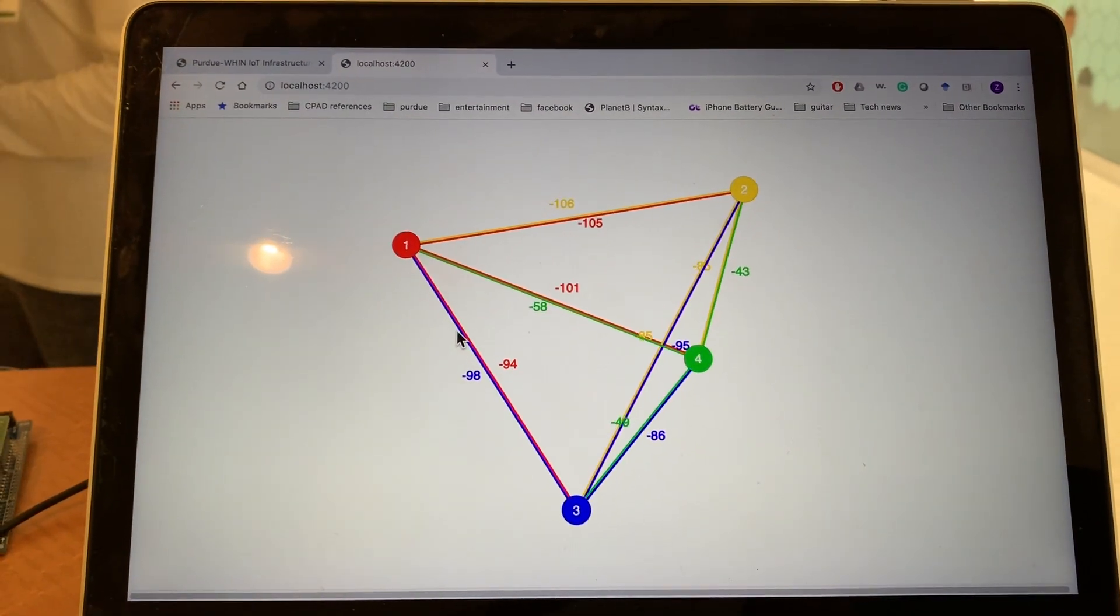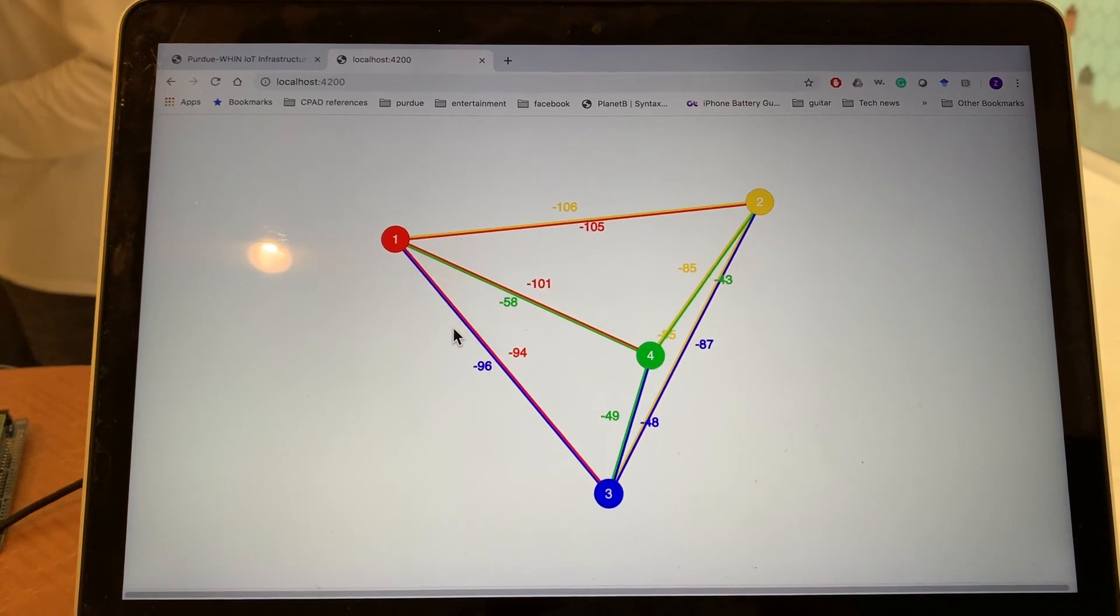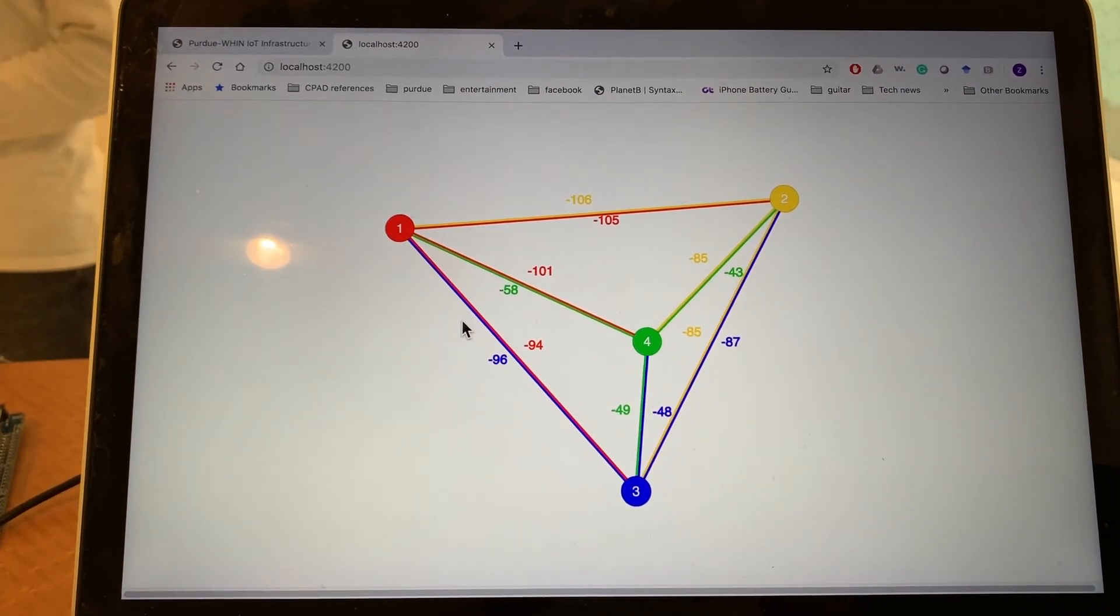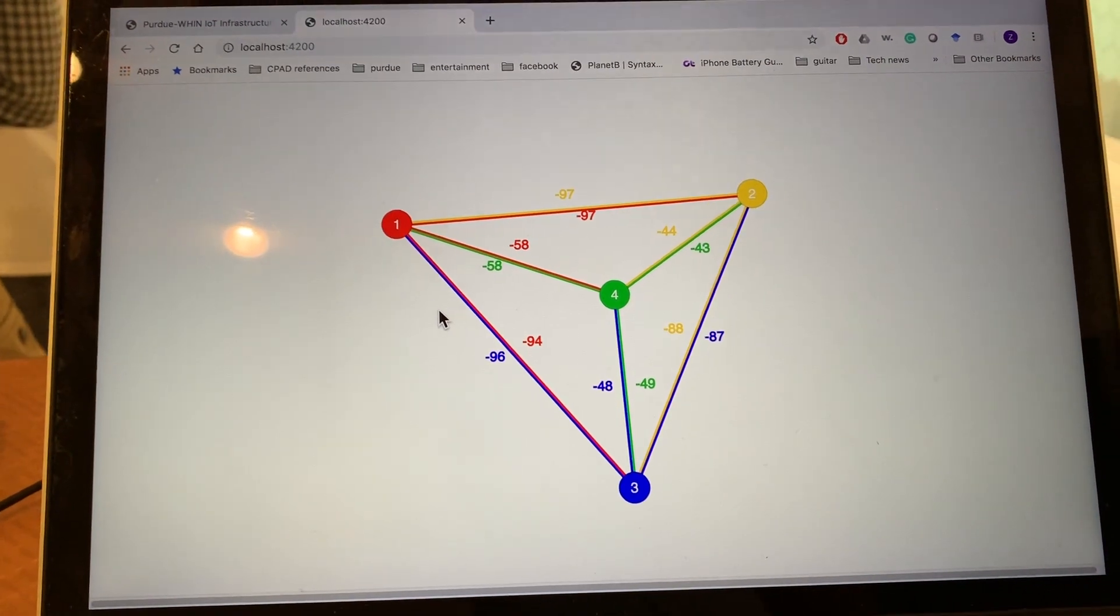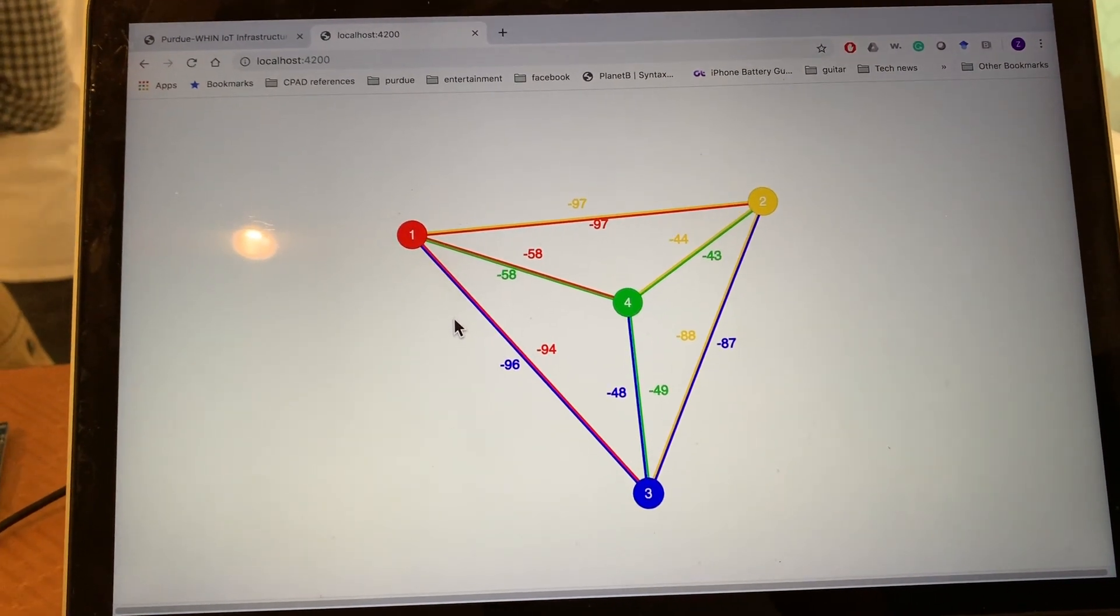On the laptop, we can see links connected with node 4 are gradually shrinking, and eventually, node 4 moves to the center in the network topology, because it has stronger signal than the other nodes.